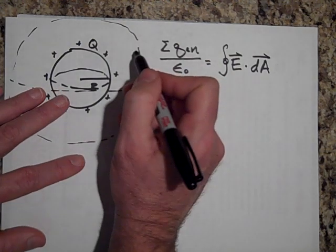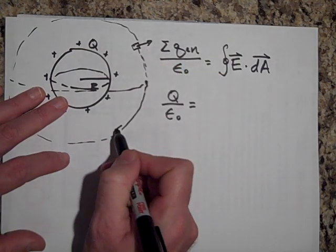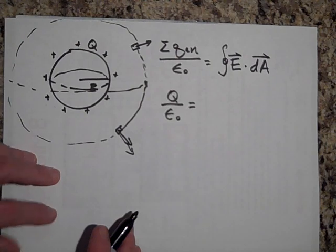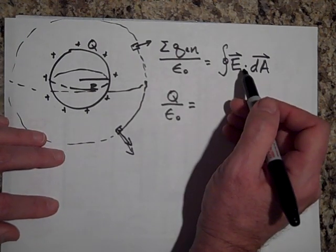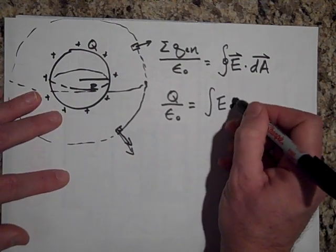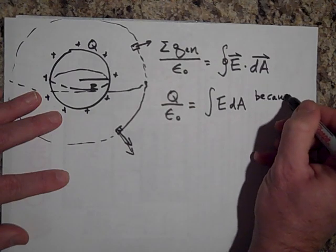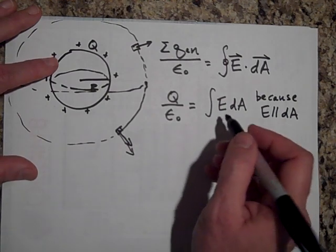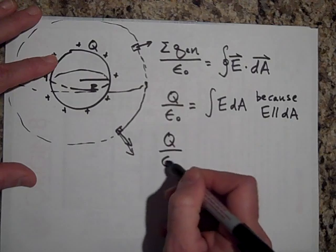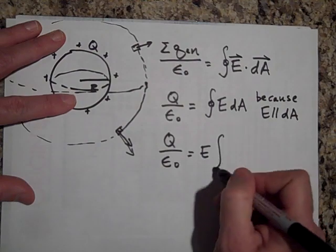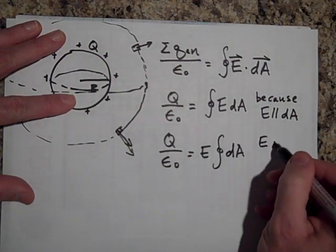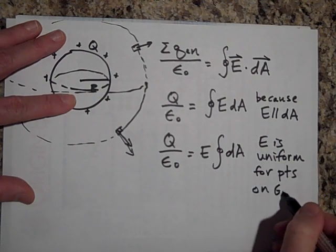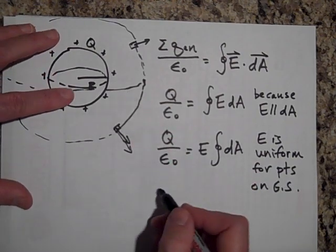Would you agree that for my Gaussian surface the dA vectors point normally outward? And E points the same way too, since the charge is positive. In that case I can get rid of the dot product, because E is parallel to dA. Now E is the same magnitude at every point on this Gaussian surface, so I can pull it out of the integral.